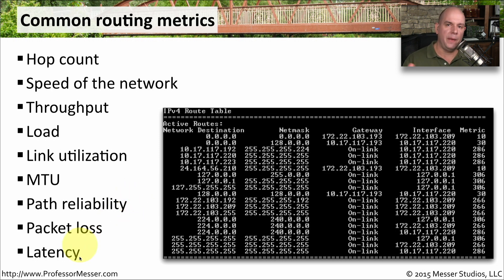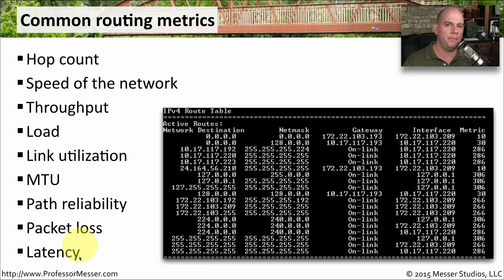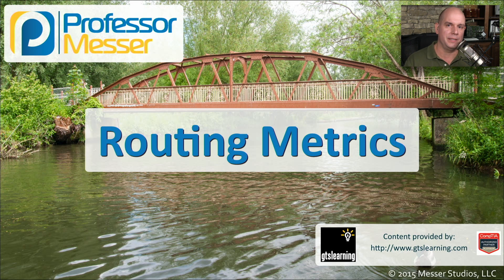That way, we can determine how big the packets are that we can put through the network, and how likely it is that traffic is going to get to the other side. Not all routing protocols examine all of these particular characteristics — some consider only one, while others consider many. So you'll need to look at the specifics of the dynamic routing protocol to understand how it's making the decision on how to get from point A to point B, and how it's calculating the metric based on those characteristics.